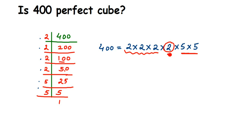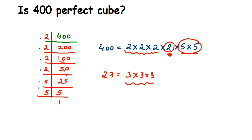If it was a perfect cube, it would have a complete set of 3 factors for every prime. For example, take 27 — it factors as 3 × 3 × 3, a perfect set of 3. So 27 is a perfect cube. Since 400 does not have complete sets of 3 for all its prime factors, we can say that 400 is not a perfect cube.